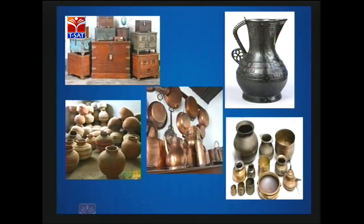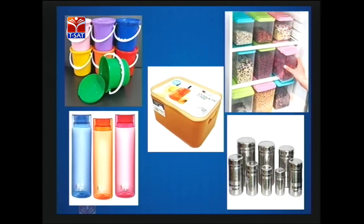I went to my grandmother and asked how was the situation in olden days. My grandma replied that there used to be copper vessels, wooden furniture, and earthen pots. But now these have all been replaced by plastic materials like buckets, containers, and bottles. We are now using 68.67% plastic and only 31% of other materials.